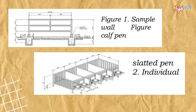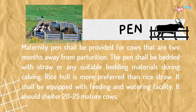Figure one shows a sample cow pen and the slatted pen layout. For maternity pens, these shall be provided for cows that are two months away from parturition. The pen shall be bedded with straw or any suitable bedding materials during calving.